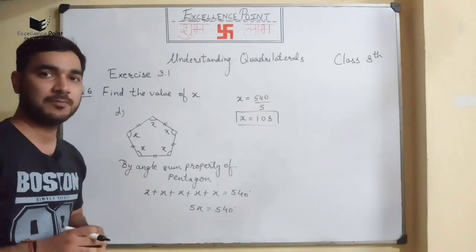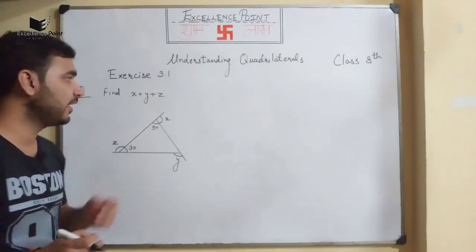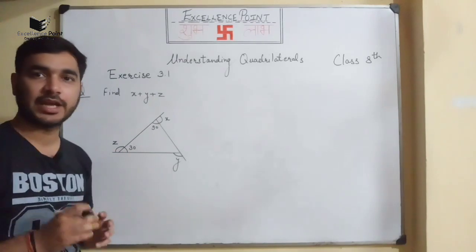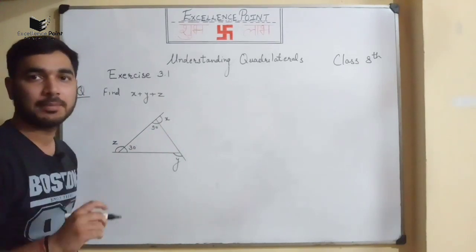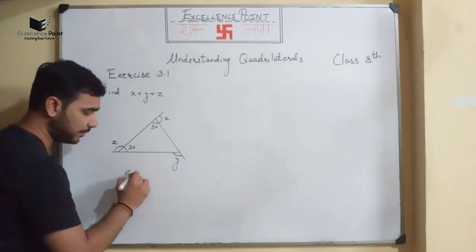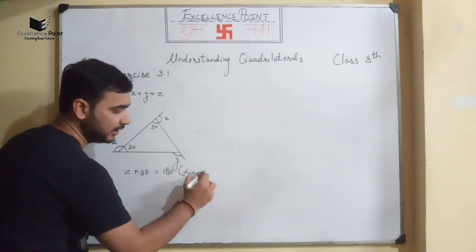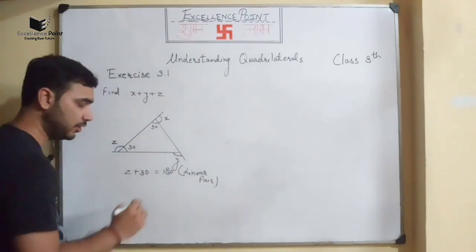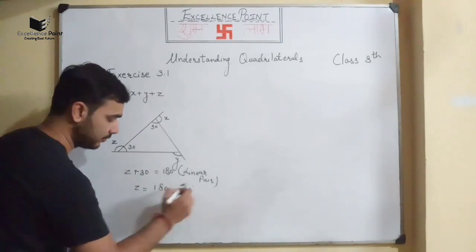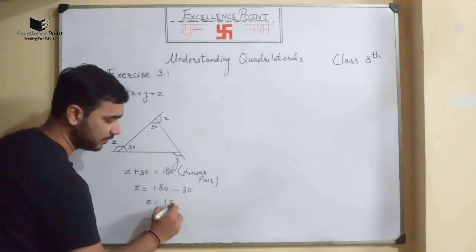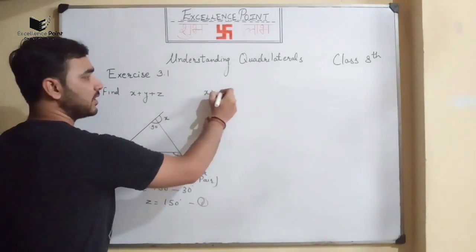So x = 108°. I hope the question is clear. Now we proceed to question number 7. We have to find the value of x + y + z from the given diagram. First, we find z using linear pair: z + 30° = 180°, so z = 150°. This is equation 1.